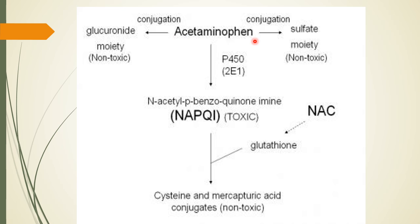To recap: acetaminophen produces the toxic metabolite NAPQI (N-acetyl-P-benzoquinone imine). Normally, acetaminophen is also converted to gluconate and sulfate, which are non-toxic. But when ingested in overdose, it converts to NAPQI. Glutathione enzyme in the liver normally converts NAPQI to non-toxic metabolites. In PCM toxicity overdose, glutathione is depleted, NAPQI accumulates and is not converted, causing toxicity.